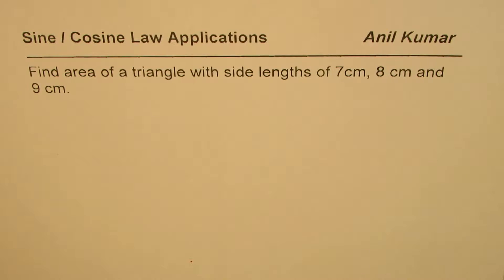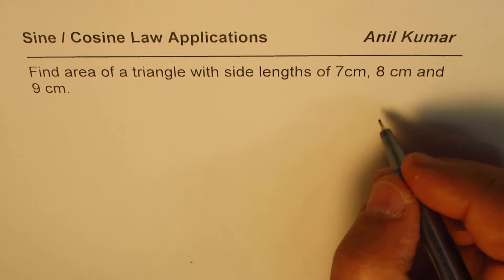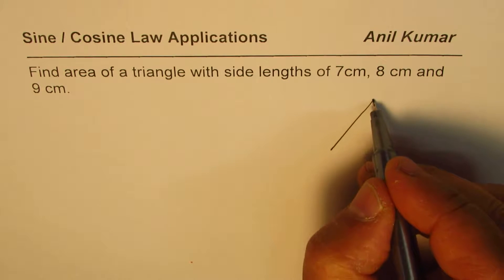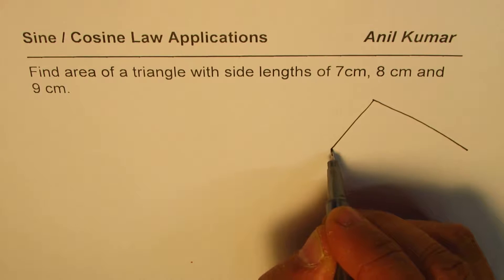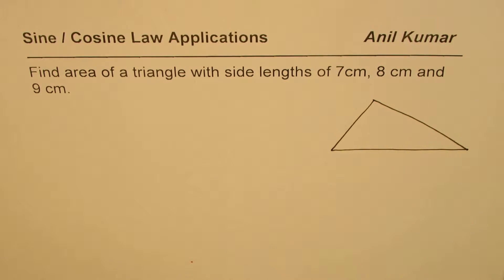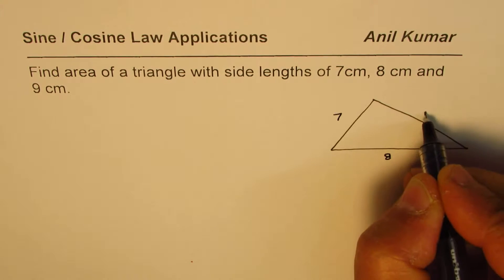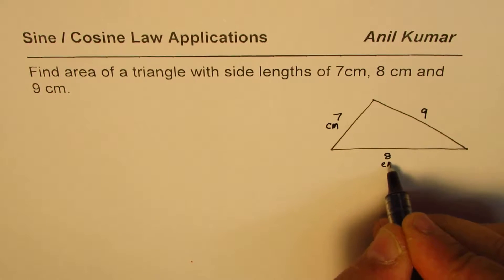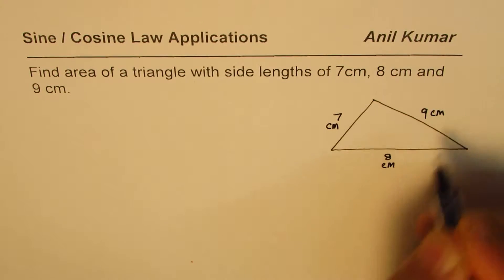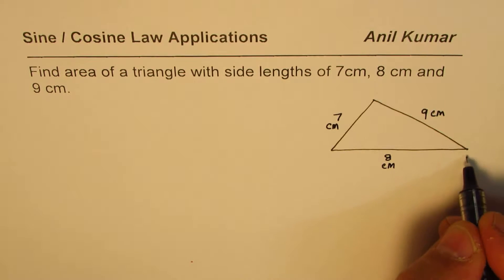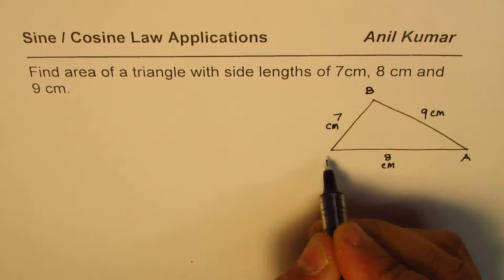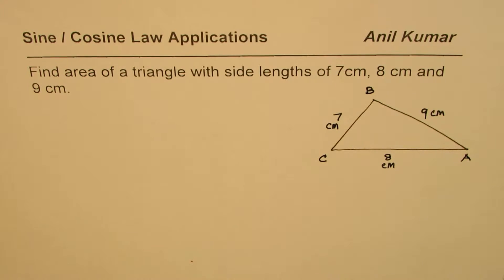So let me sketch one triangle with these sides. We'll just make a rough sketch. We have a triangle here whose sides are 7, 8, and 9. Let's say this is 7, this is 8, and 9, all in centimeters. Let me call this triangle A, B, and C. So this is the triangle given to us.